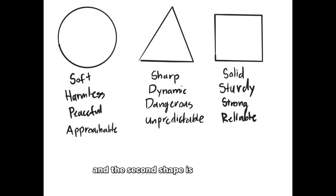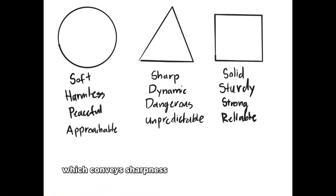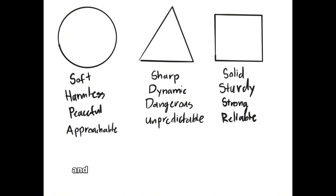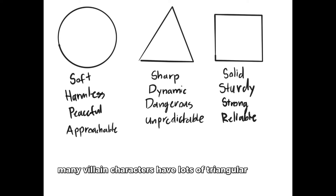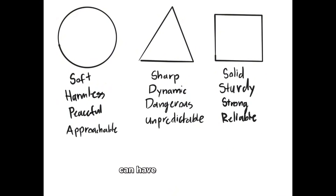The second shape is the triangle, which conveys sharpness, dynamic, unpredictability, and it can sometimes mean dangerous as well. Many villain characters have lots of triangular shapes, but other characters that aren't villains can have this shape too.